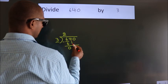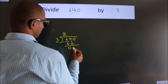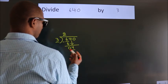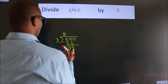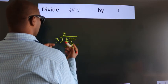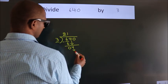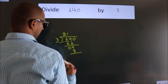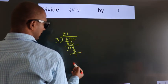After this, bring down the beside number, so 4 down, so 4. A number close to 4 in 3 table is 3 1s, 3. Now, we subtract, we get 1.